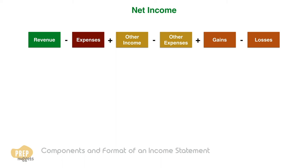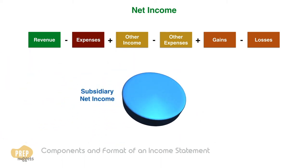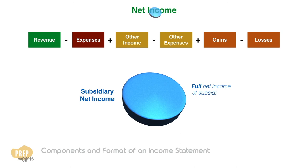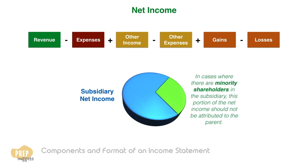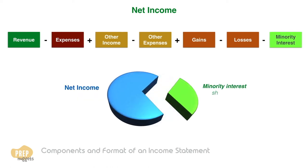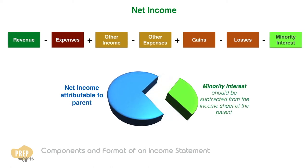If a firm has a controlling interest in a subsidiary, the entire net earnings of the subsidiary is reported in the income statement of the parent. In cases where there are minority shareholders in the subsidiary, this portion of the net income should not be attributed to the parent. This portion of the subsidiary's earnings is known as the minority interest, and it should be subtracted from the income statement of the parent.